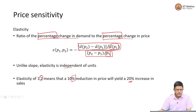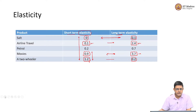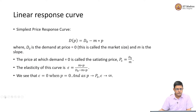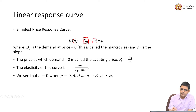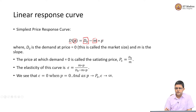The simplest possible example is a linear demand response curve. Demand at a particular price point P may have some initial value D0, where the slope is given by M and P is the price. So D0 minus M into P will be the demand at that particular price.